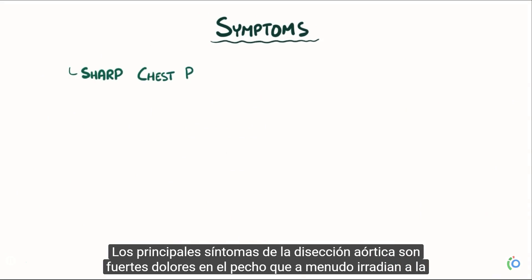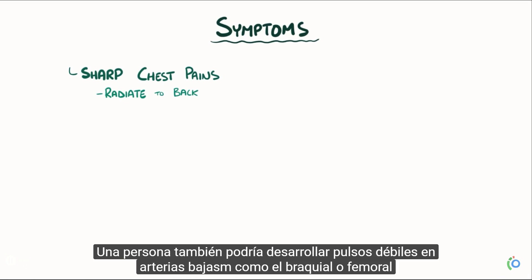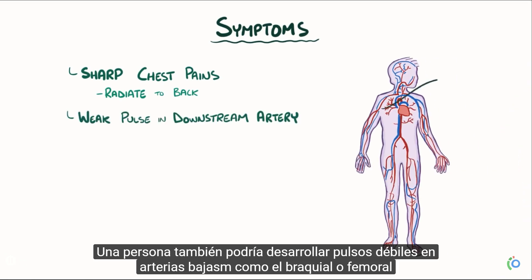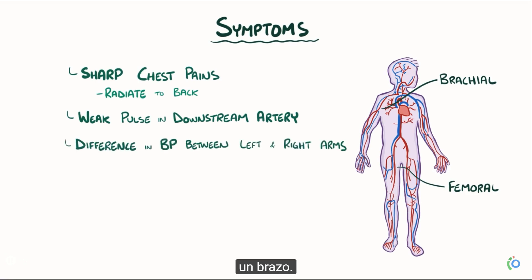The main symptoms of aortic dissection are sharp chest pains that often radiate to the back. A person might also develop weak pulses in downstream arteries like the brachial or femoral arteries, or sometimes there might be differences in blood pressure between the left and right arm.